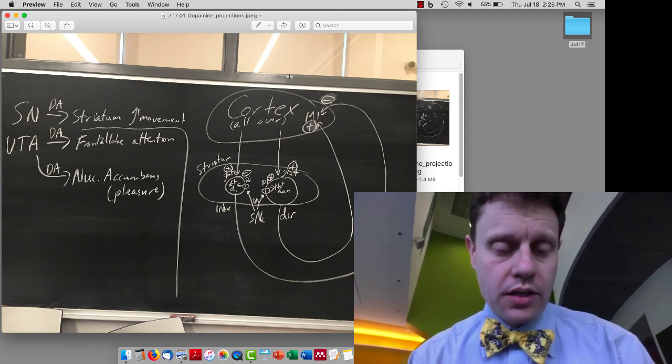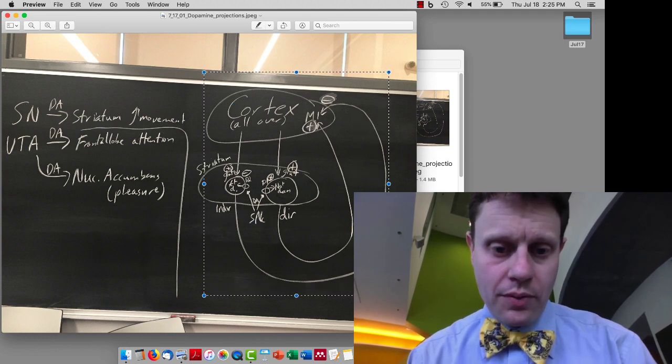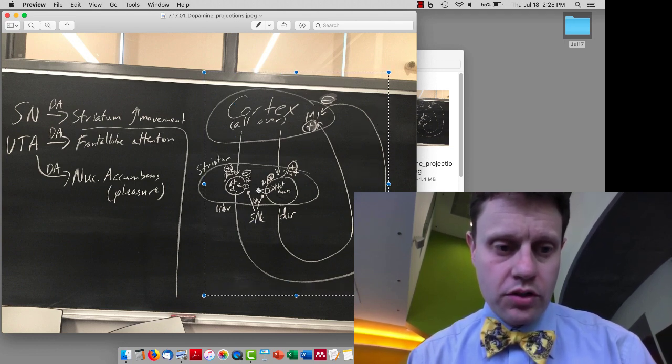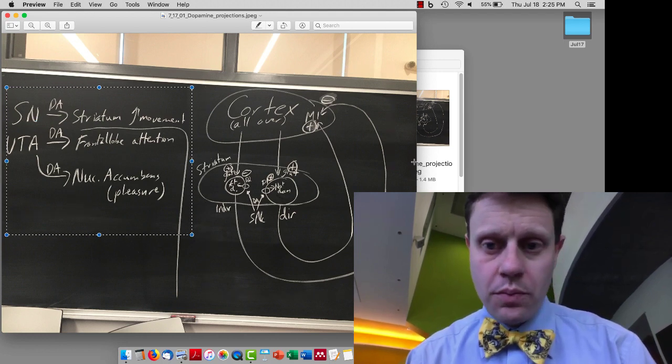First of all, we reviewed in particular the cortex and striatum and the different pathways there and the role of dopamine, the two different dopamine receptors there, and then summarized the main pathways for dopamine signaling in general.